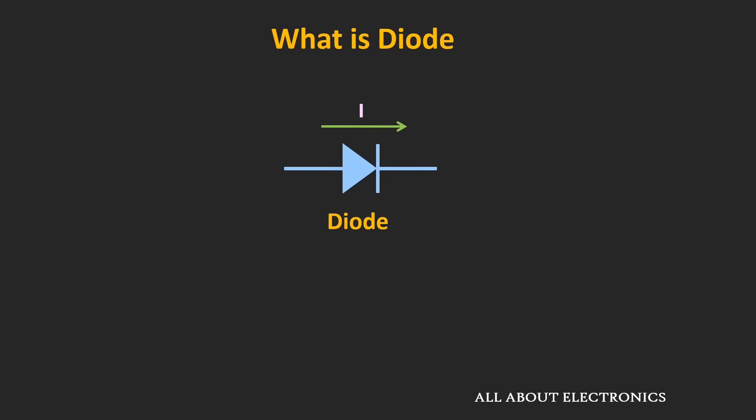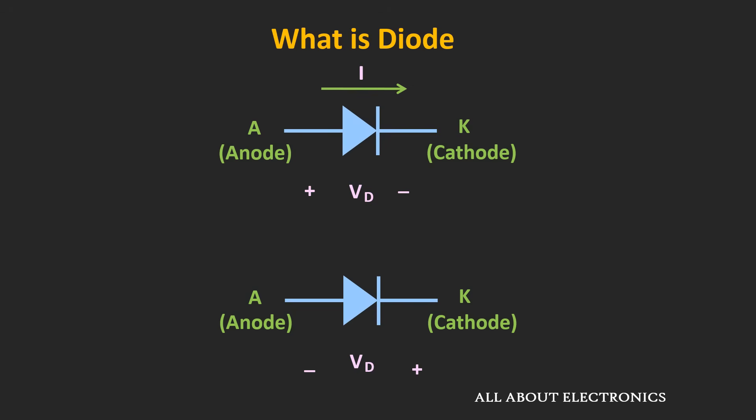If you see the symbol of the diode, this arrow indicates the direction in which the diode allows the flow of current. One terminal of this diode is known as the anode and the second terminal is known as the cathode. Whether this diode will allow the flow of current depends upon the polarity of the voltage applied between the anode and cathode. If the voltage is positive, the diode will allow current flow; if negative, it will not.